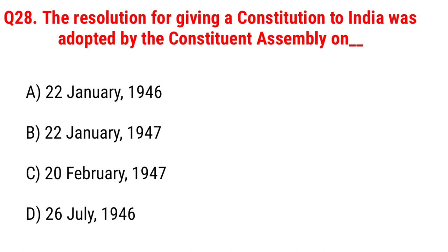Next question: the resolution for giving a constitution to India was adopted by the Constituent Assembly on Option A, 22 January 1946; B, 22 January 1947; C, 24 November 1947; D, 26 July 1946. The right answer is Option B, 22 January 1947.